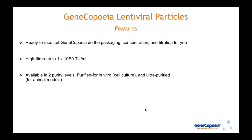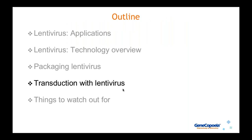If you don't want to do your own lentiviral packaging, GeneCopia can do it for you. Our custom lentiviral particle production service produces ready-to-use particles — we handle packaging, concentration, and titration. We generate high titers up to 1 × 10^9 TU/ml, available at two purity levels: standard purity for in vitro cell culture use, and ultra-purified for animal models.